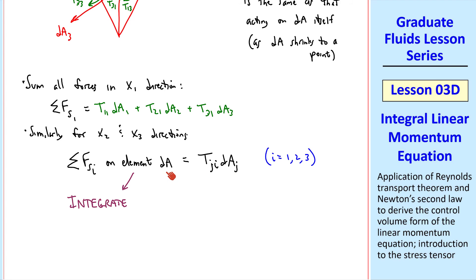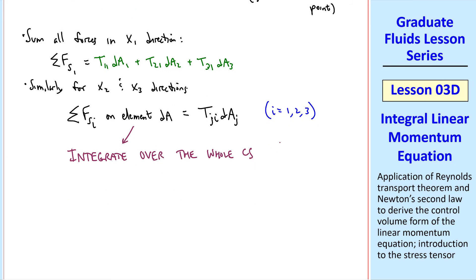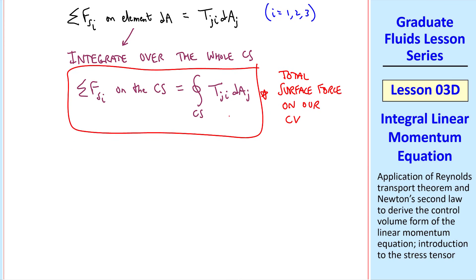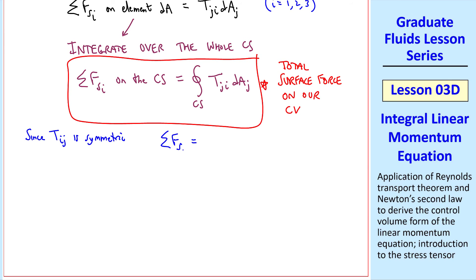Finally, we need to integrate, since this is just a little element dA, over the whole control surface. So finally, sigma Fs1 on the control surface is the integral over the entire control surface of tji dAj. This is the total surface force on our control volume. One comment: since tij is symmetric, we can also write sigma Fs sub i as the integral of tij dAj. That's just an alternate expression. This first one is valid even if tji were not symmetric.